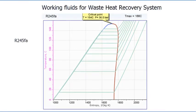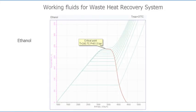As the temperature of exhaust gases is about 400 to 500 Celsius, not only refrigerants but higher temperature working fluids can be used. In the scope of this study, three types of working fluids will be considered. Refrigerant R245fa is featured with a critical point of 154 Celsius and pressure of about 36 bar, with a maximum available temperature of 166 Celsius. Ethanol is featured with a critical point of 241 Celsius and pressure of about 61 bar.